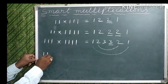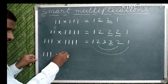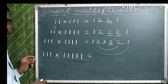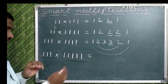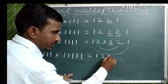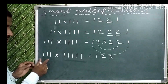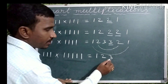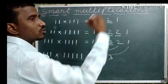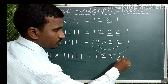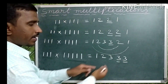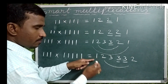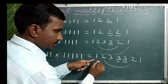Suppose 111 into 11111 — 3 ones and 5 ones. Least number of ones is 3, so write 1, 2, 3. Difference of ones is 2, so the highest number (3) repeats 2 times: 3, 3. Then write before 3 in descending order: 2, 1. That is the answer: 1, 2, 3, 3, 3, 2, 1.